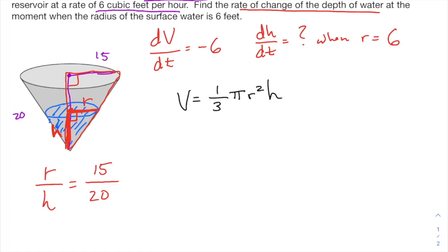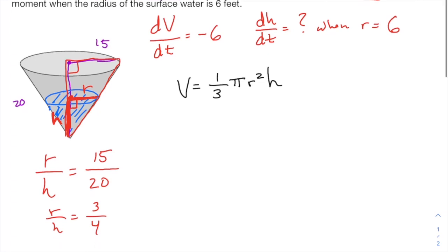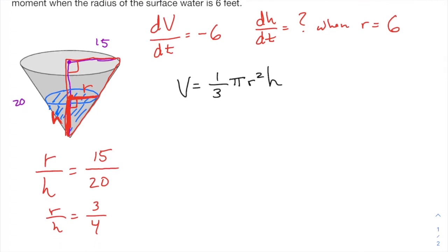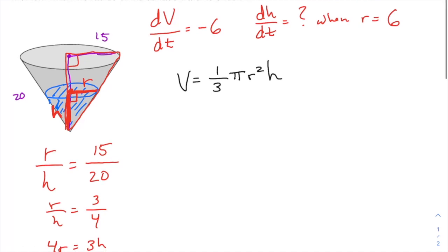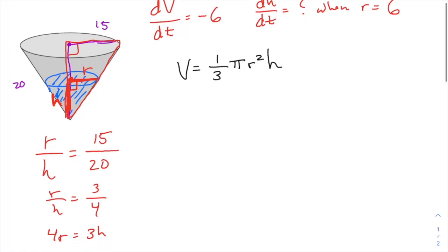But this proportion here is what's going to allow you to solve for either variable in terms of the other. And this is kind of nice. This reduces to three fourths. If you want to reduce before you do any work with it, r is three fourths of h or r over h equals three fourths. So if I cross multiply here for r equals three h, I really want my equation to be all in terms of h. So I'm going to solve for r in terms of h, which I guess I could have just done here by multiplying by h a couple steps back.